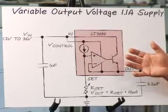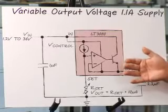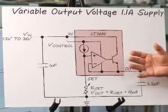So the LT3080 is a 1.1 amp regulator. It has one mic cap on the input and output, one resistor to set the output.